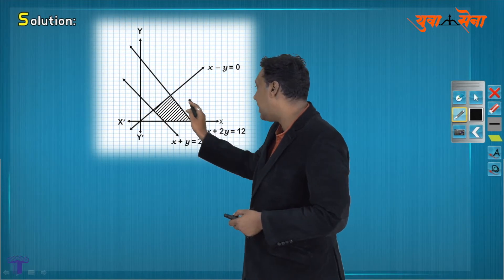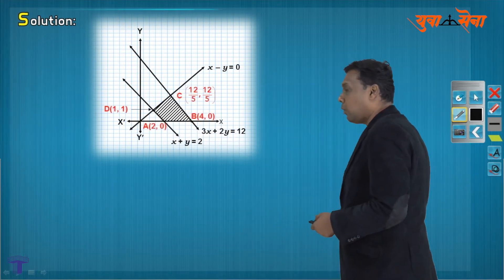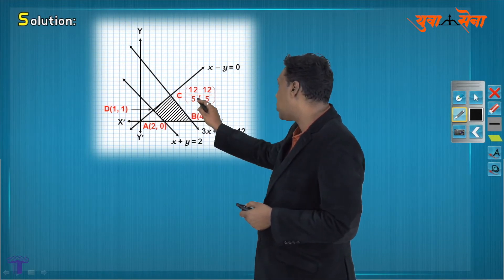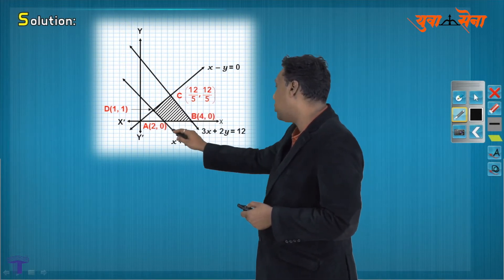We have one corner here, second, third, and fourth. We will check out which corner, what vertices. This intersection is 1, 1. This should be 12 by 5, 12 by 5. This is 4, 0. This is 2, 0.